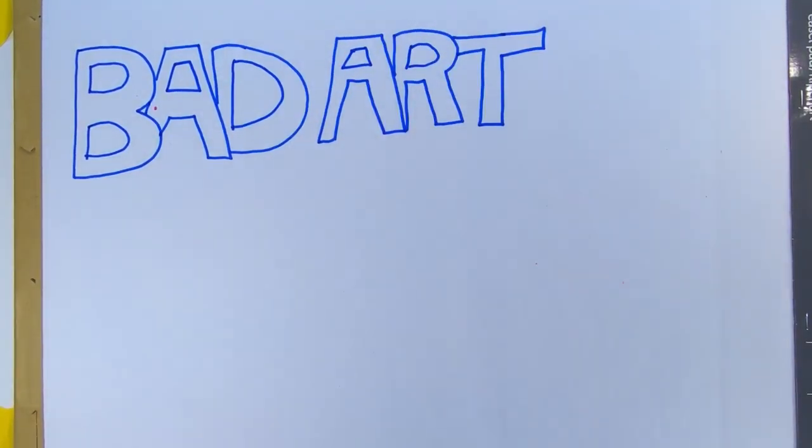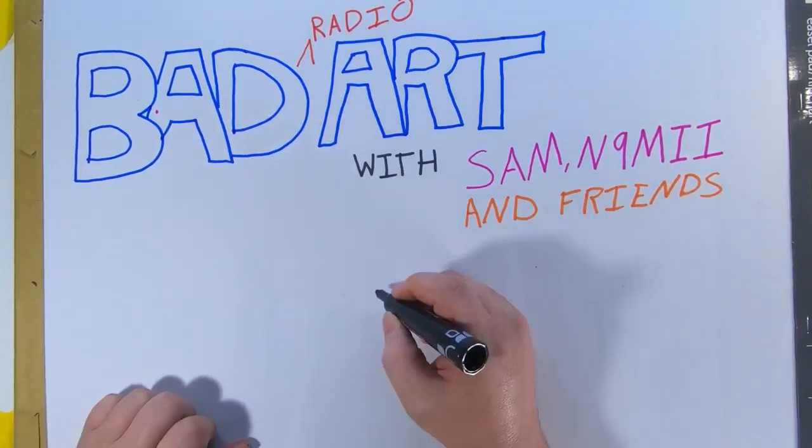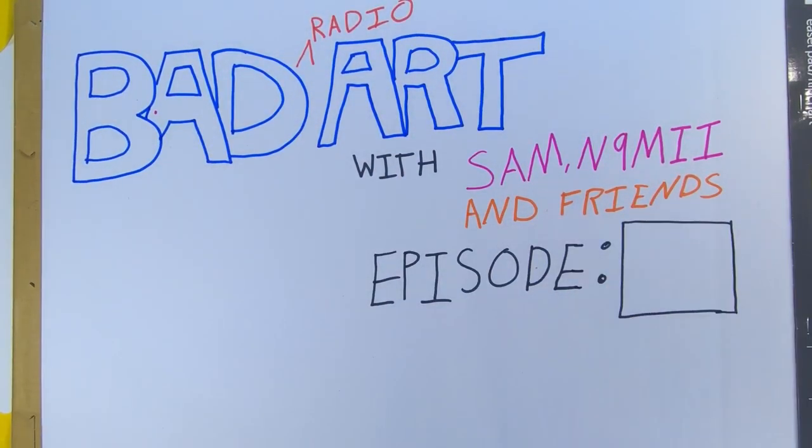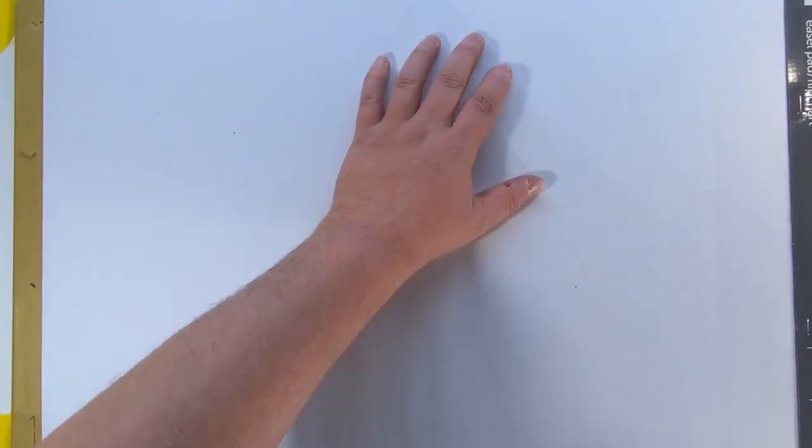Welcome back to Bad Art with Sam. Today we're covering three topics that are a single chapter in your book and are all very interlinked: propagation, antennas, and feed lines. This is the longest video yet, but it leads to some of my favorite stuff. So let's get started.